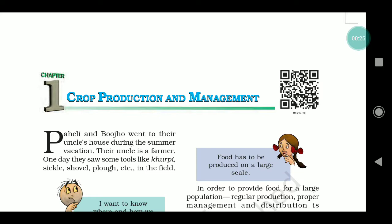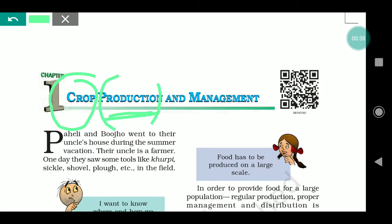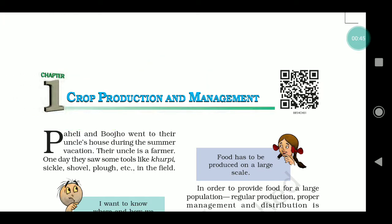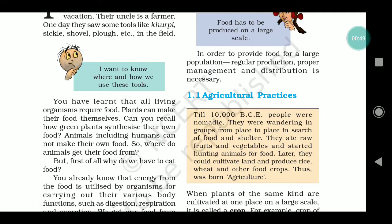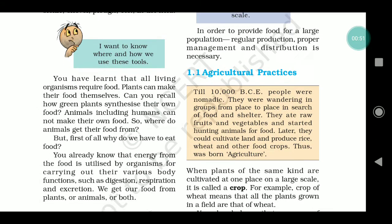Whatever food materials we get from plants — how the production of those plant-based food materials happens — that is what we understand by 'crop.' How we produce that crop and how we manage it — all these topics we are going to discuss. This is a chapter review. First, we will study agricultural practices.